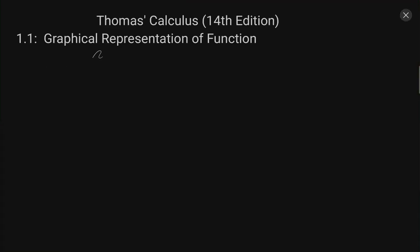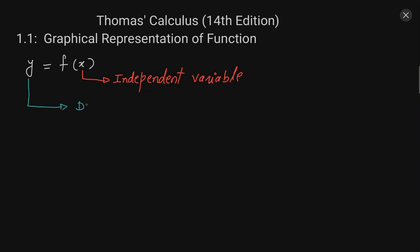Any function can be written as y is equal to f of x. Here x is the independent variable, while y is the dependent variable. x is called the independent variable because we can take any value of x as we wish, while y depends on the value of x, so it is called the dependent variable.